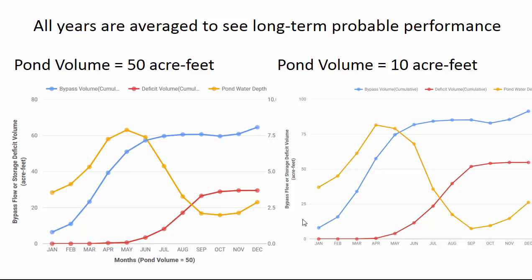Just knowing behavior in a few wet and dry years isn't what people really want — you want a many-year average. So we take those graphs and average them over all the years. At a pond volume of 50 acre-feet averaged over 30 years, the pond volume rises in spring and drops in summer, with some bypass and some irrigation deficit — much smoother. Comparing 50 to 10 acre-feet, they look similar but the axes differ: the 50 acre-feet plot has a maximum of 100, the 10 acre-feet plot has 80, and both bypass and deficit volumes are higher with only 10 acre-feet.